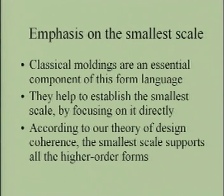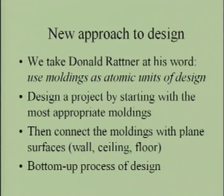To finish with classical moldings: they are an essential component of the classical form language. They help establish the smaller scale by focusing on it directly. According to our theory of design coherence, the smallest scale supports all higher-order forms. This is a fundamental property in all systems — in system theory, the smallest scale has to support all the higher-order forms.